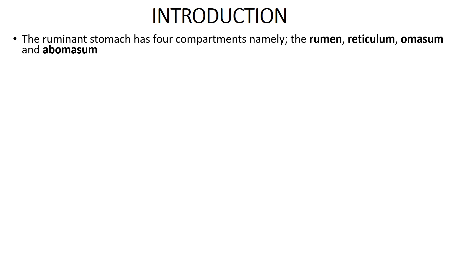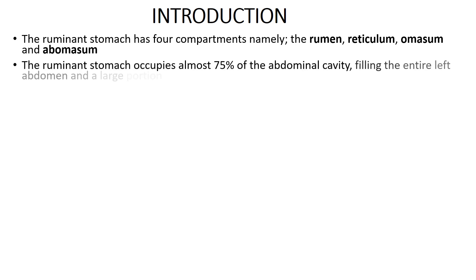On this slide, I will provide some general information on the ruminant stomach and give the names of the compartments that make up the four stomachs in ruminant animals. The ruminant stomach has four compartments: the rumen, the reticulum, the omasum, and the abomasum. This arrangement is based on how food flows within the stomach of the ruminant animal. The ruminant stomach also occupies almost 75% of the abdominal cavity. It fills the entire left abdominal cavity and a large portion of the right side as well — quite massive.